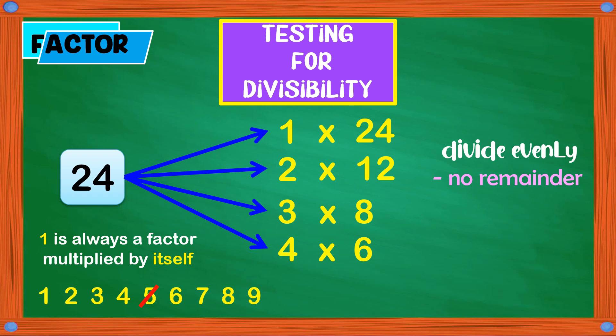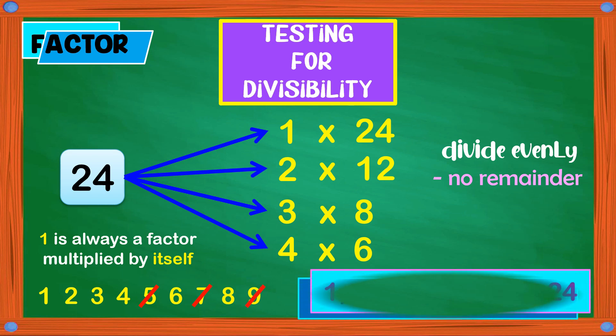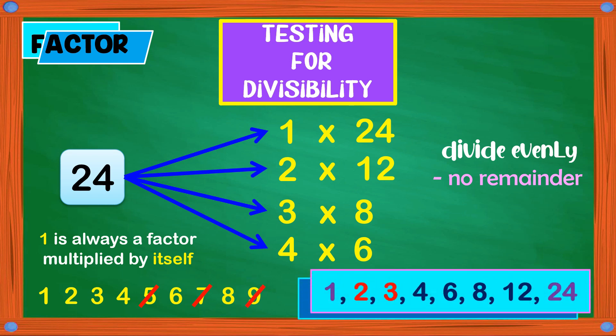24 is not divisible by 5. 6 is already given. 24 is not divisible by 7. 8 is already given. 24 is not divisible by 9. So the list of factors of 24 are 1, 2, 3, 4, 6, 8, 12, and 24.